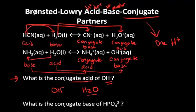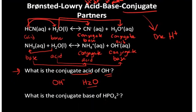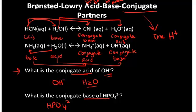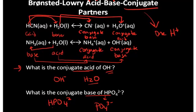What is the conjugate base partner of hydrogen phosphate? The base partner of a compound acting like an acid is going to have one less hydrogen. So in this case, the conjugate base partner is going to be the phosphate anion — it's the exact same compound, only minus one hydrogen.